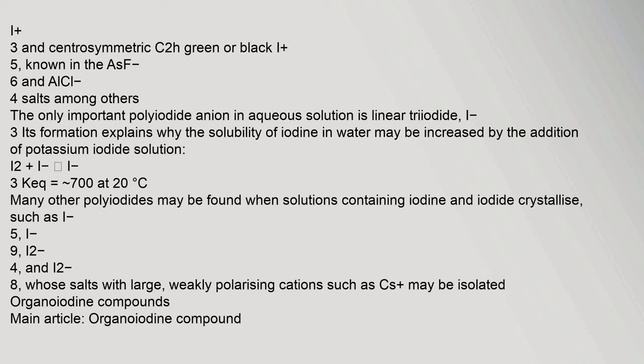Polyiodine Compounds: The triiodide anion I₃⁻ is known in centrosymmetric form. The only important polyiodide anion in aqueous solution is the linear triiodide I₃⁻. Its formation explains why the solubility of iodine in water may be increased by the addition of potassium iodide solution: I₂ + I⁻ → I₃⁻, with an equilibrium constant of approximately 700 at 20°C.